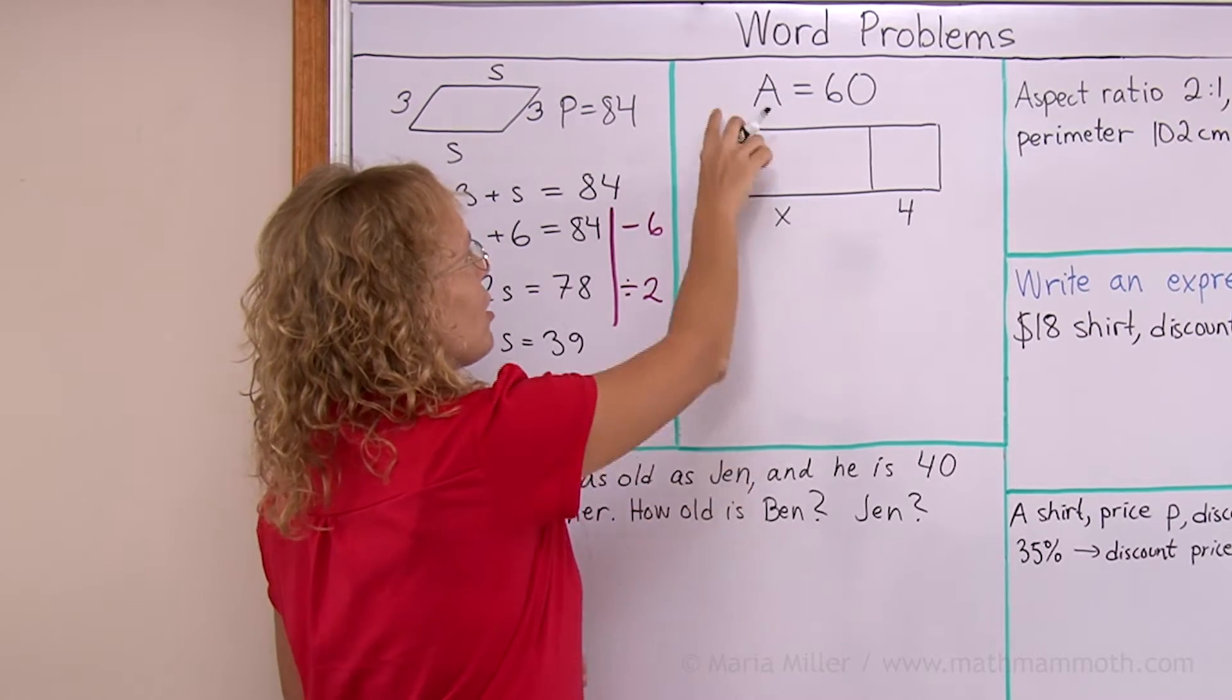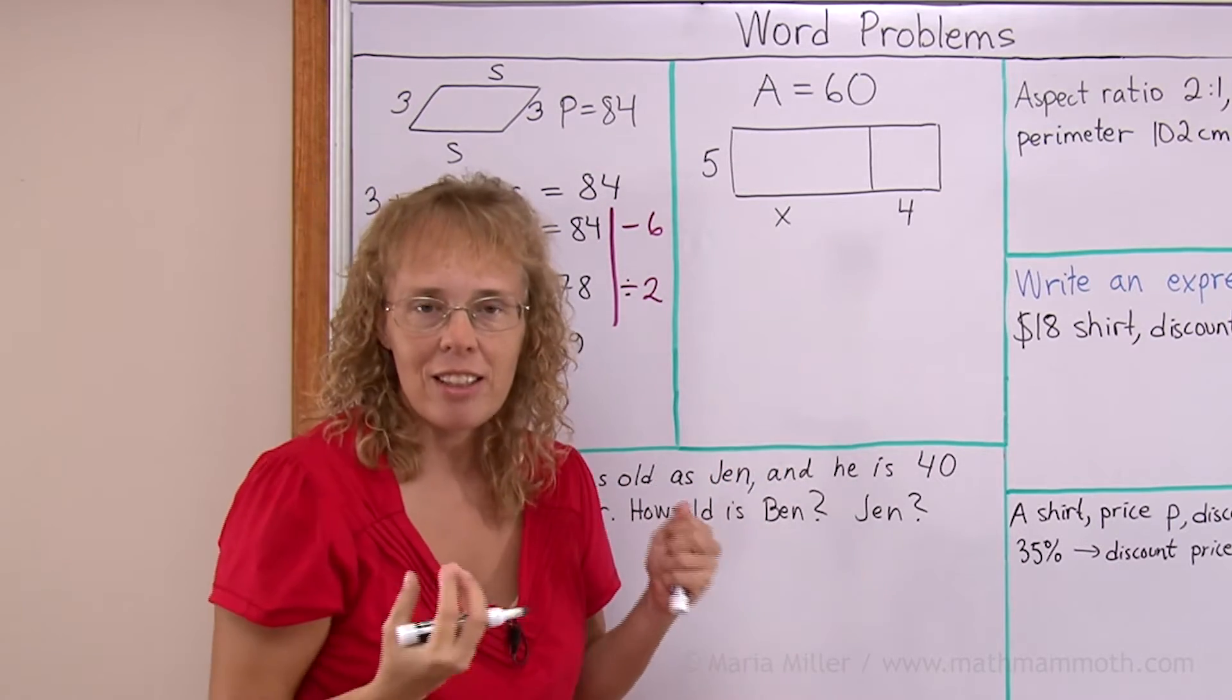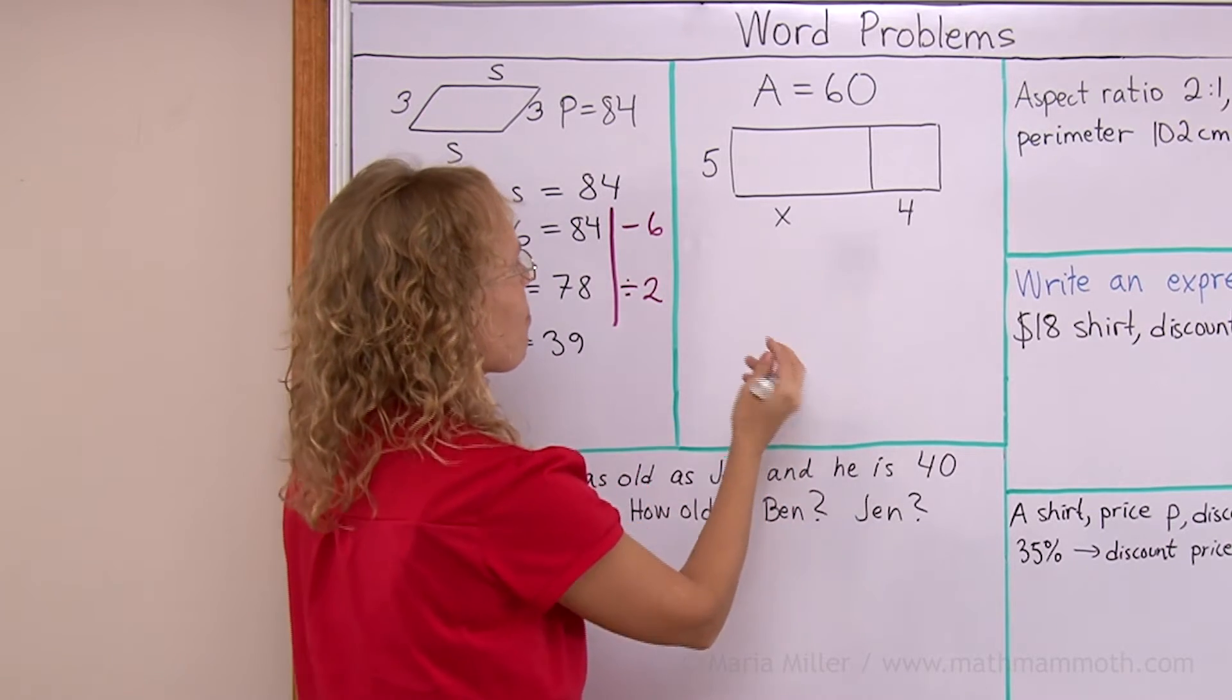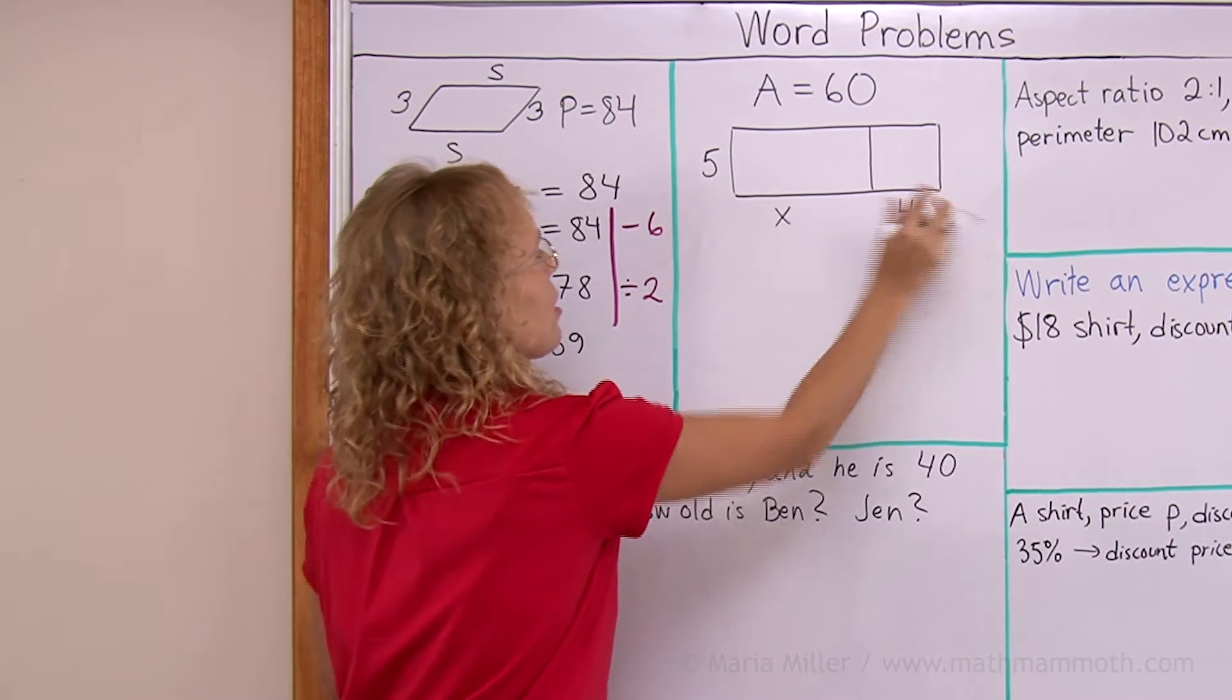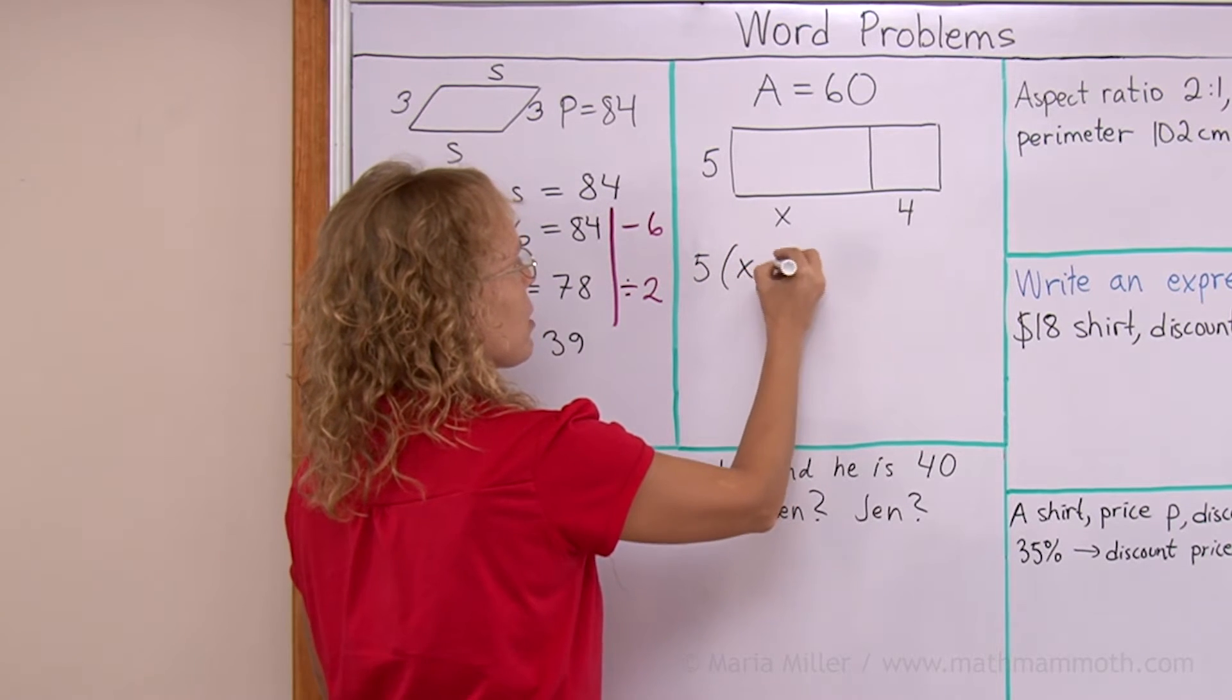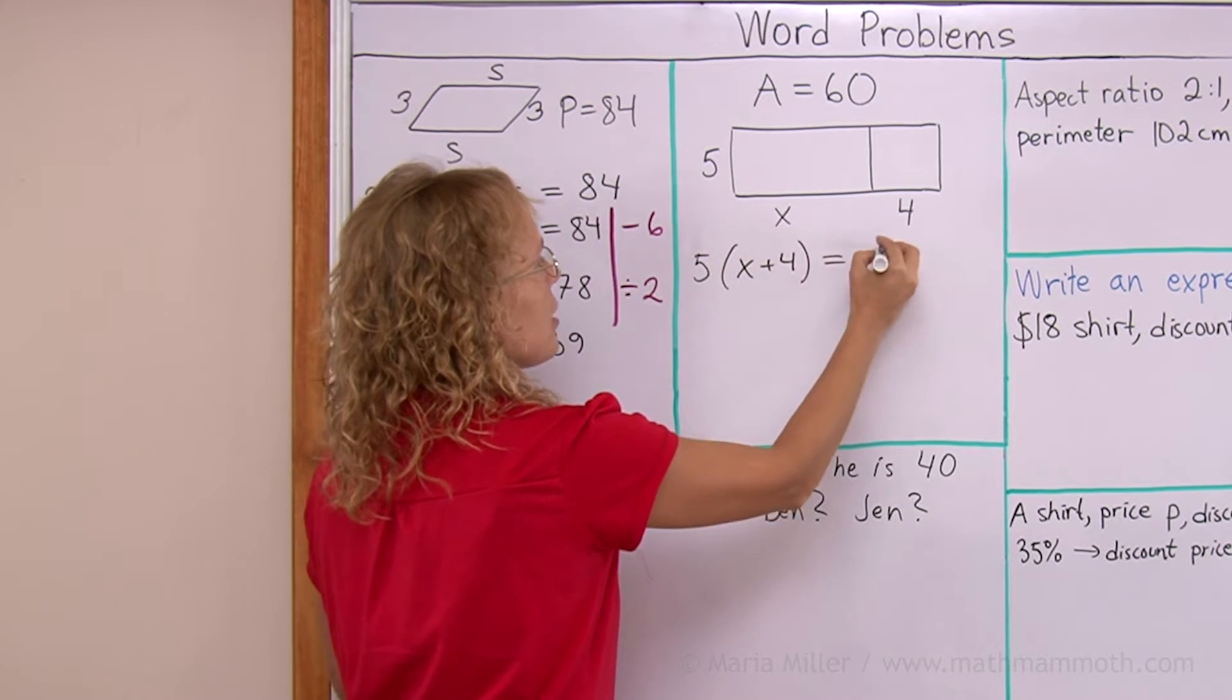And so, for the equation, you know the area. Area is 60. So right here, an expression for the area equals 60. The area is 5 times this whole side. 5 times this whole side is x plus 4. And so that is 60.